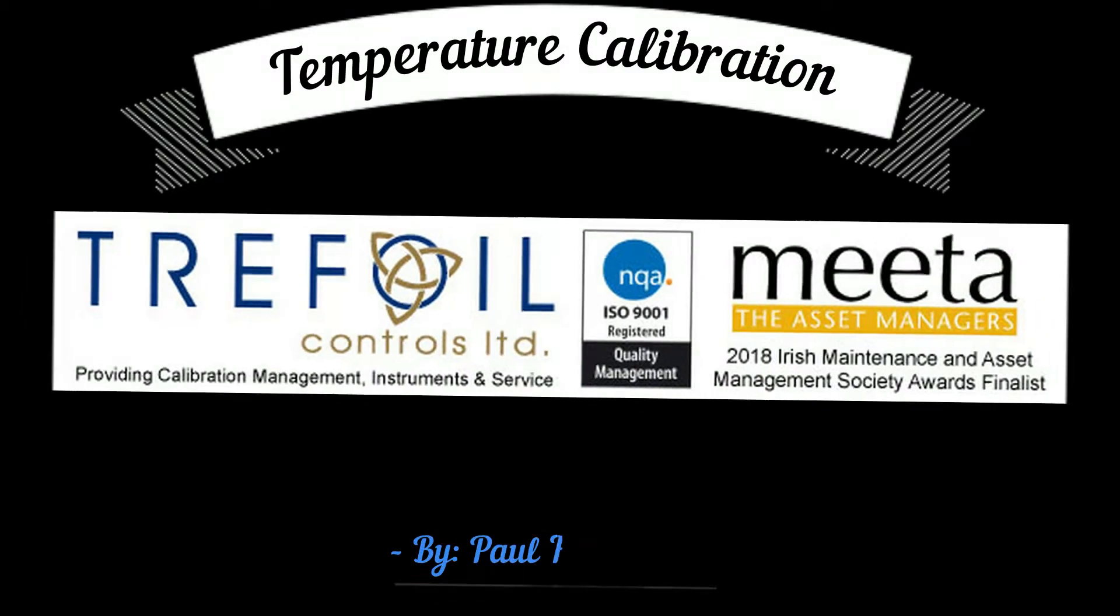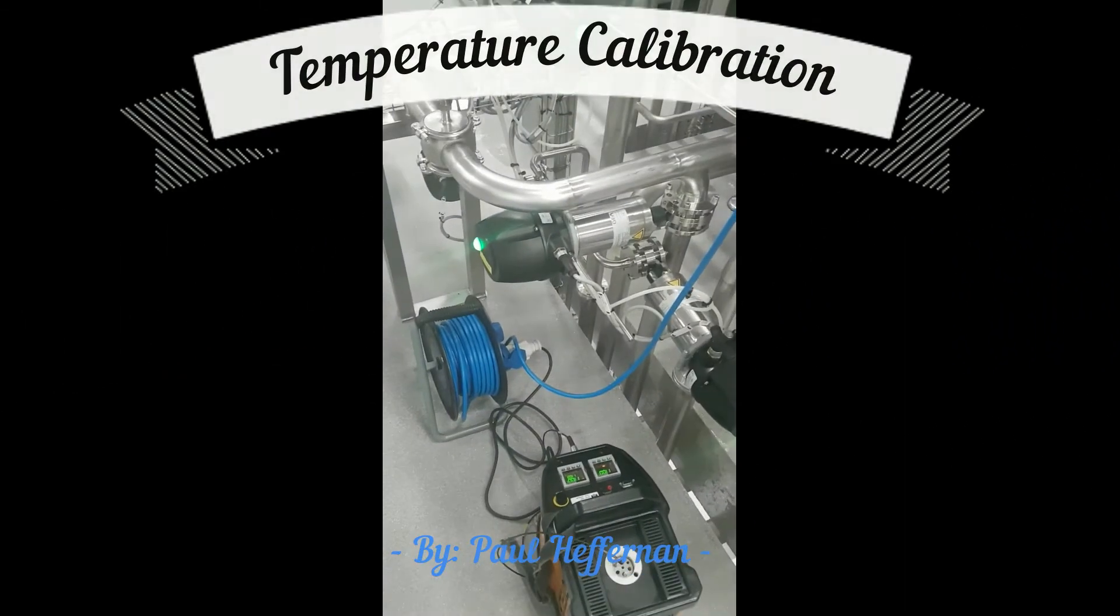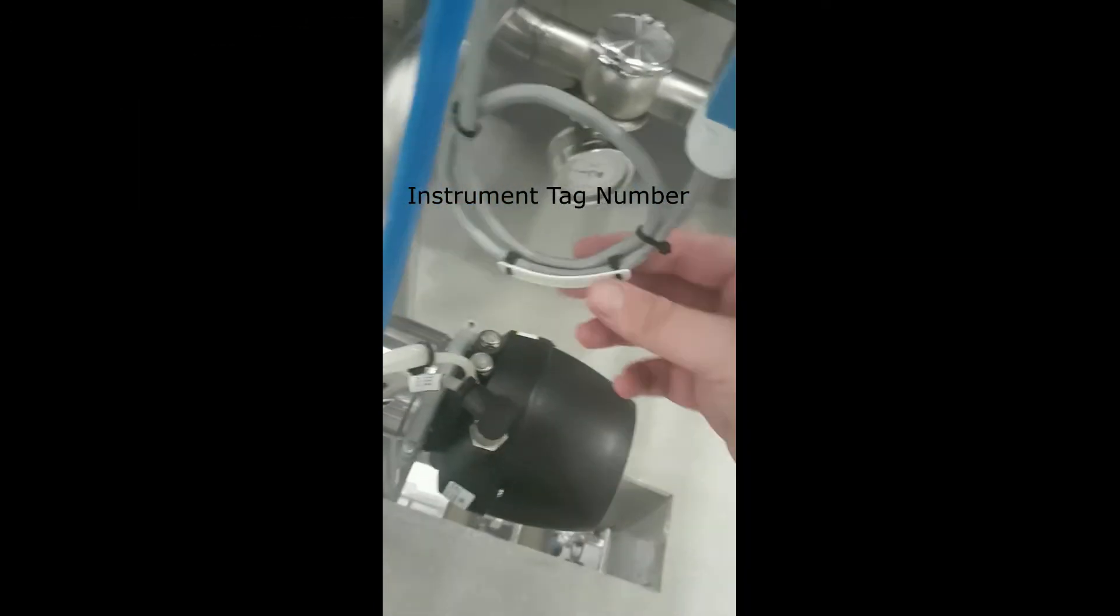This is a simple demonstration of a temperature calibration RTD injection with a certain type of temperature probe. As you can see we have an Emerson Rosemount transmitter with a client's tag.